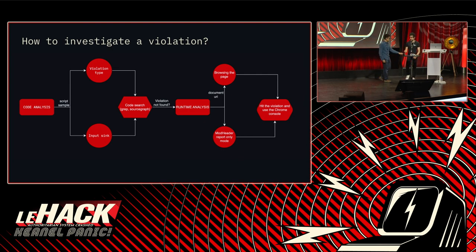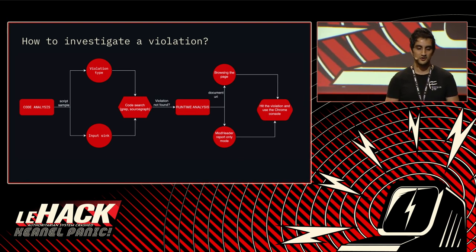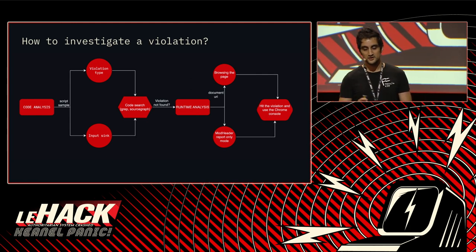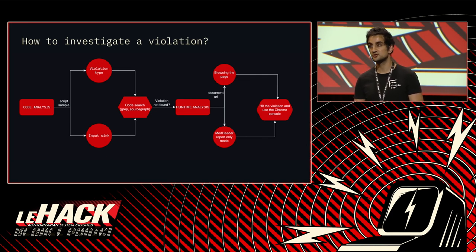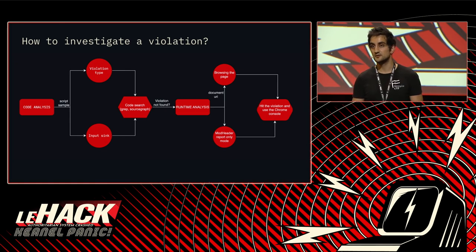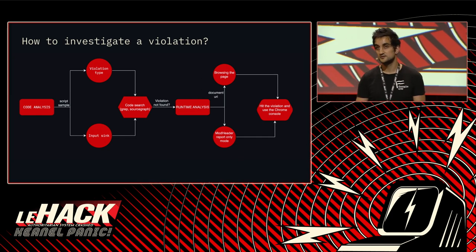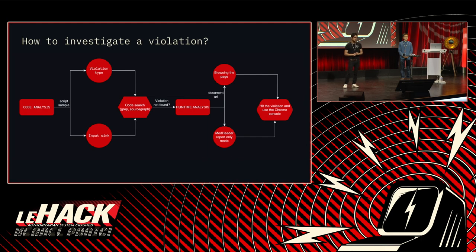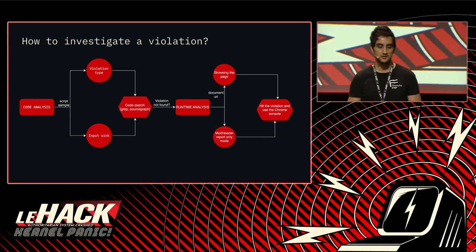To summarize investigating a violation: the script sample field is our favorite — it will contain basically all the information required to find 80% of violations. You'll have two main pieces of info: the violation type tells you what kind of violation is happening — an innerHTML call or one of the many DOM sinks — so you know what you're looking for. Then comes the input string: if it's a static string visible in your code base, a simple grep will find where it's happening. It could also be code being re-injected somewhere in your DOM, or user input giving you context about where the violation might be happening.